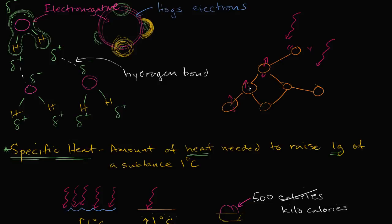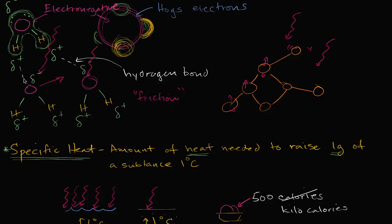In the case of water, when you add more energy, it makes the water molecules move faster and have more kinetic energy. But to do that, they have to overcome the creation and breaking of hydrogen bonds — almost like the friction of a hydrogen bond. If a water molecule wants to move, it has to break a hydrogen bond, form another, and break that. Some heat energy is used to overcome those hydrogen bonds rather than increasing kinetic energy directly — and that's why water can store more heat and has a higher specific heat.